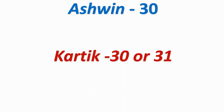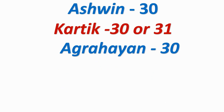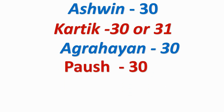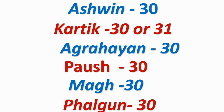In Ashwin, there are 30 days. In Kartik, there are 30 or 31 days. In Agrahan, there are 30 days. In Posh, there are 30 days. In Magh, there are 30 days. In Falgun, there are 30 days.